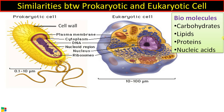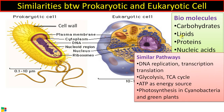Carbohydrates are primarily involved in providing energy, lipids are associated with formation of membranes, proteins are primarily the enzymes, and nucleic acids serve as genetic material in both prokaryotic and eukaryotic cells.